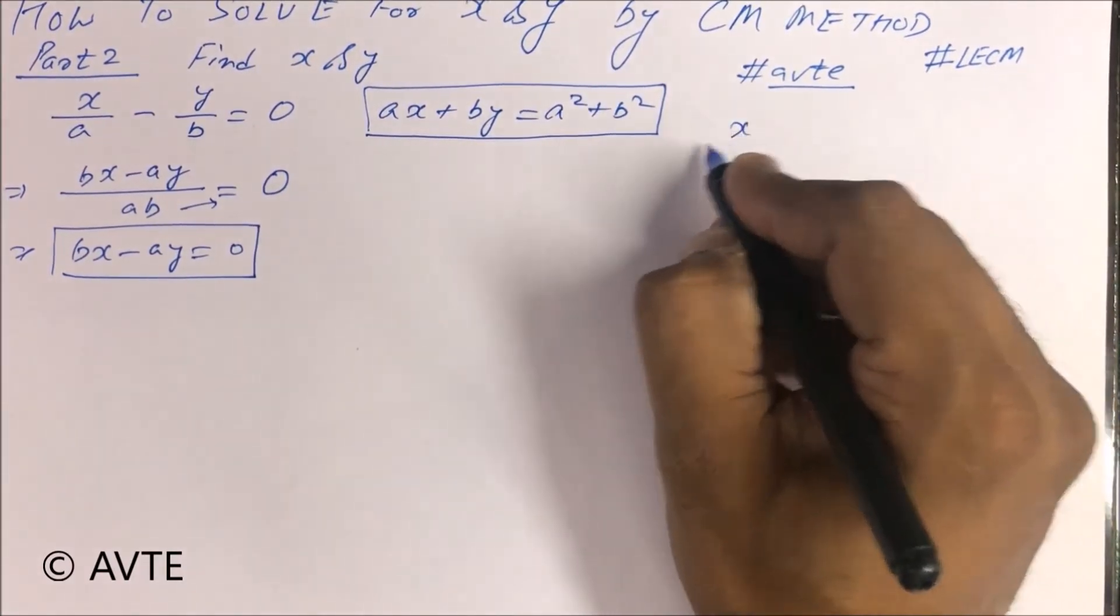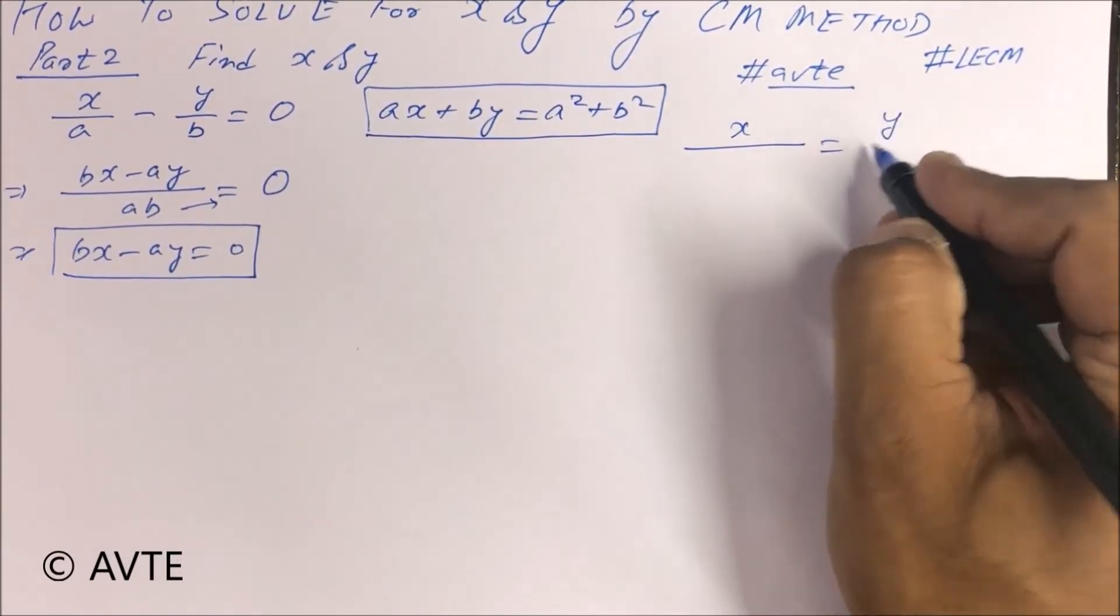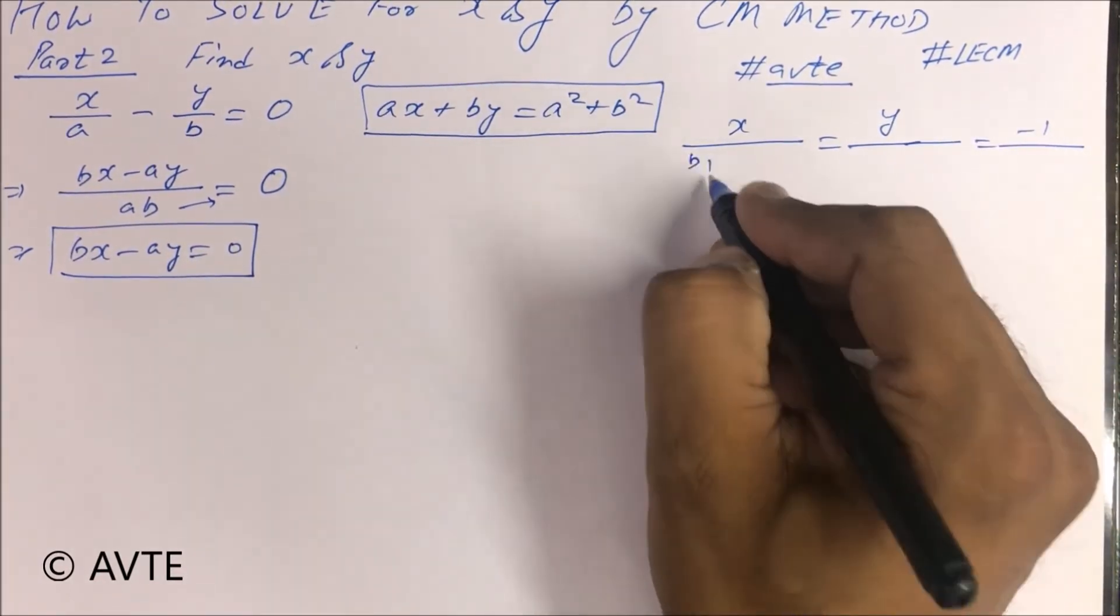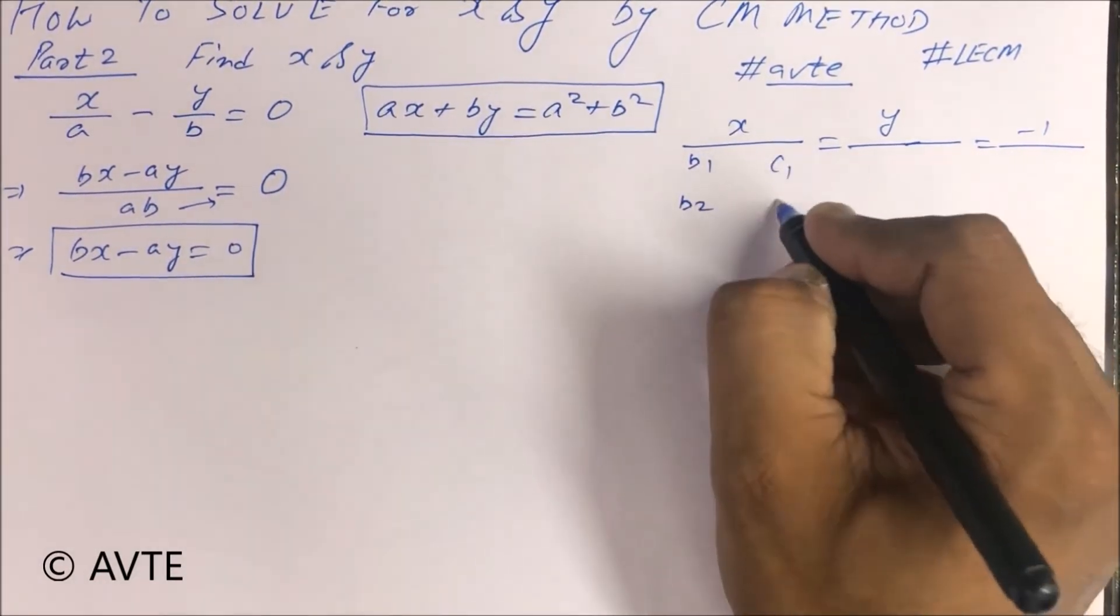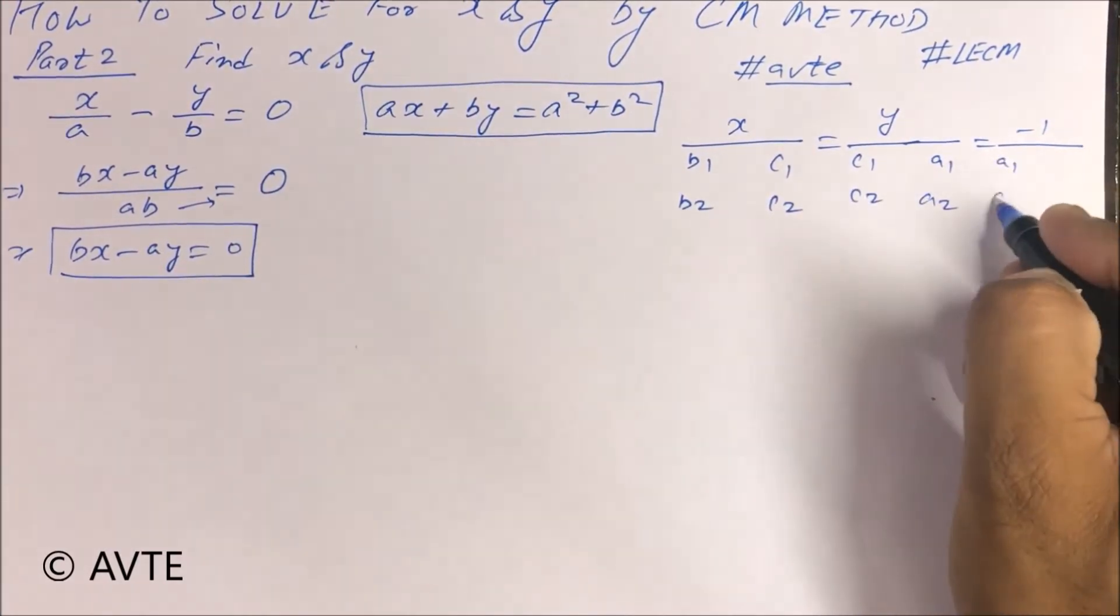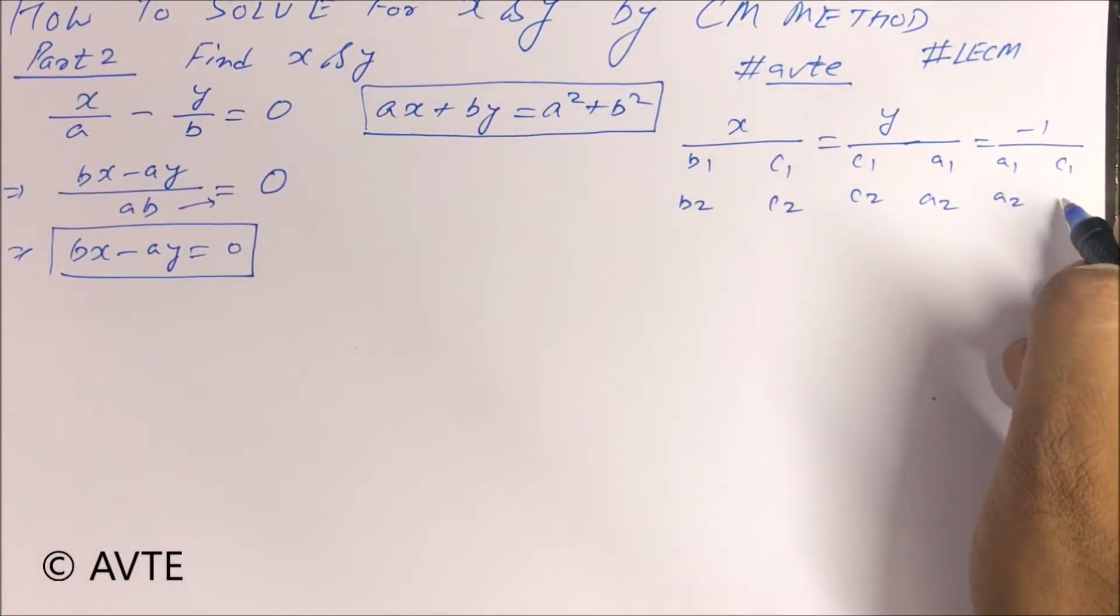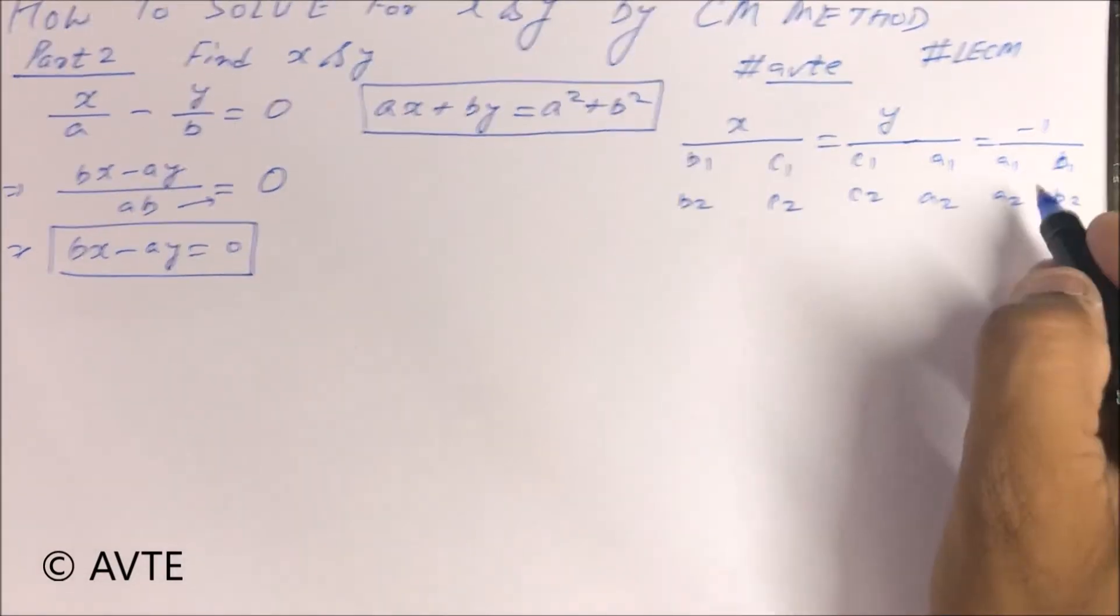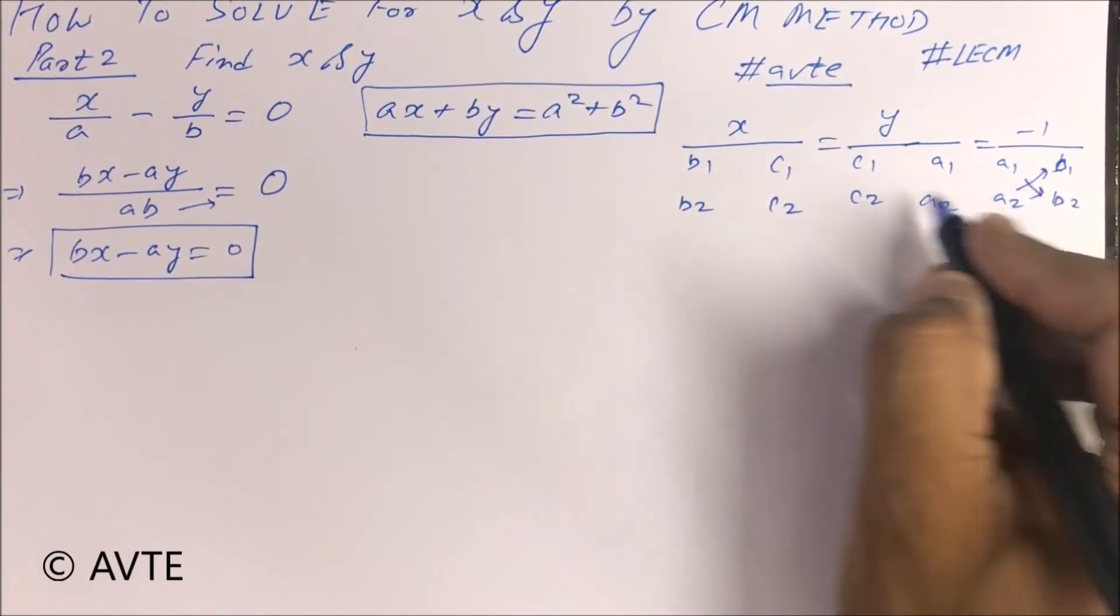We apply the formula of cross multiplication, that is B1, B2, C1, C2, B, C, C, A, A, B, down up, down up, down and up. We have to place the values of these coefficients of X and Y in